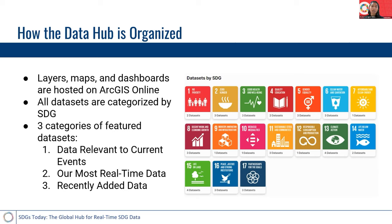The third category is the most recently added datasets — the ones we have added most recently in the past month or so. The first is foreign direct investment. We also have a dataset on mapping school locations, which Mike will talk about in his presentation. And we have also recently added a dataset on global phishing activity.